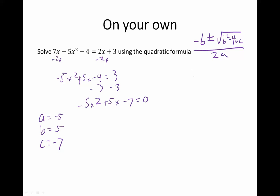Plugging into my formula, I get negative 5 plus or minus the square root of 5 squared minus 4 times negative 5 times negative 7. So 4 times 5 times 5 times 7 is 140. There are three negatives here, though, so that is going to end up being a negative 140.